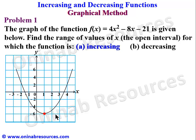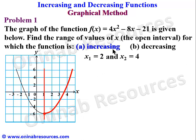In this graph the turning point is a minimum point. Having identified the minimum point, we look at the line of symmetry of the graph. The minimum interval is x = 1; to the right of this, the curve is going up, so the function is increasing. We can verify this by taking x1 = 2 and x2 = 4, then finding f(4) and f(2).